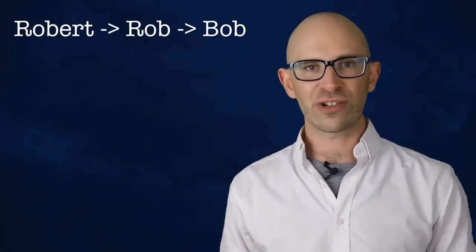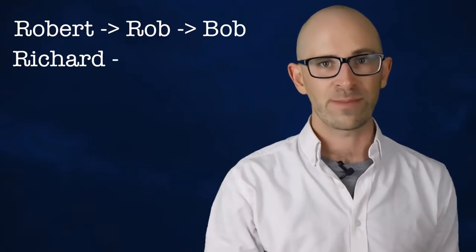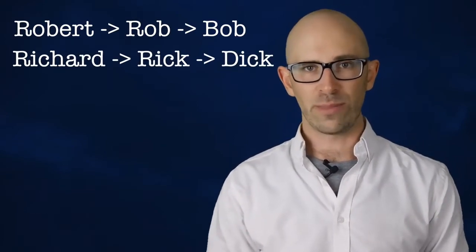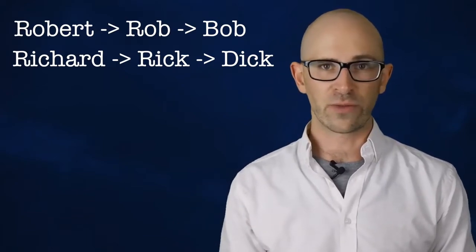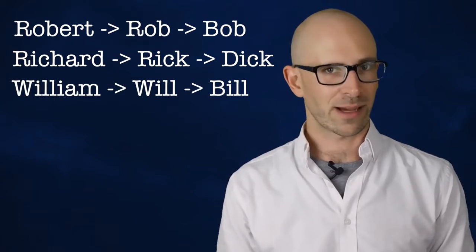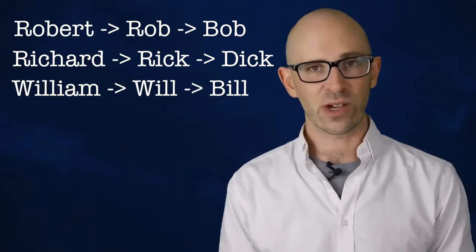People with the name Robert are also called Bob via much the same process as people who are named Richard being called Dick—namely Robert to Rob and then the rhyming nickname Bob. Similarly, this is how we get Bill from William, William to Will, rhyming with Bill. Polly likewise comes from the name Molly, and the list goes on and on.